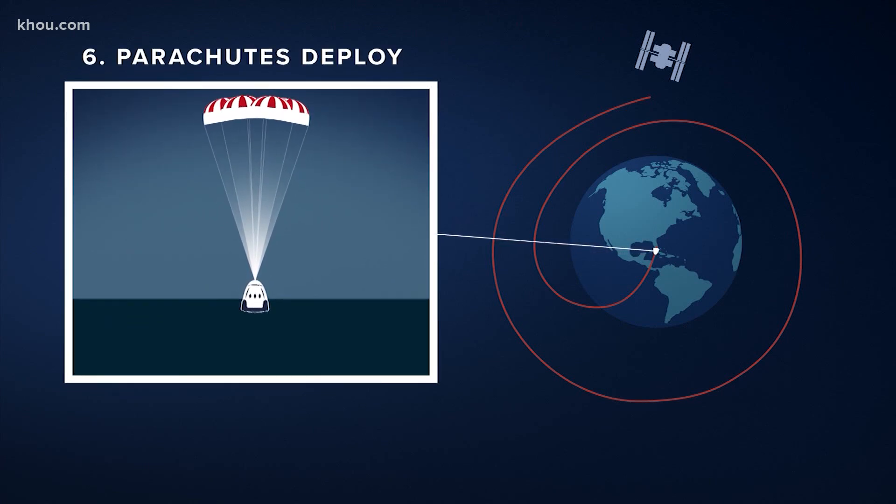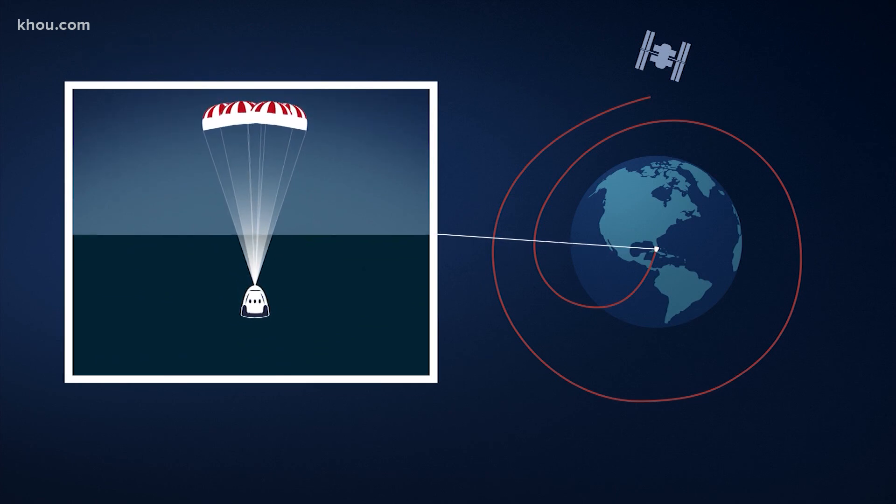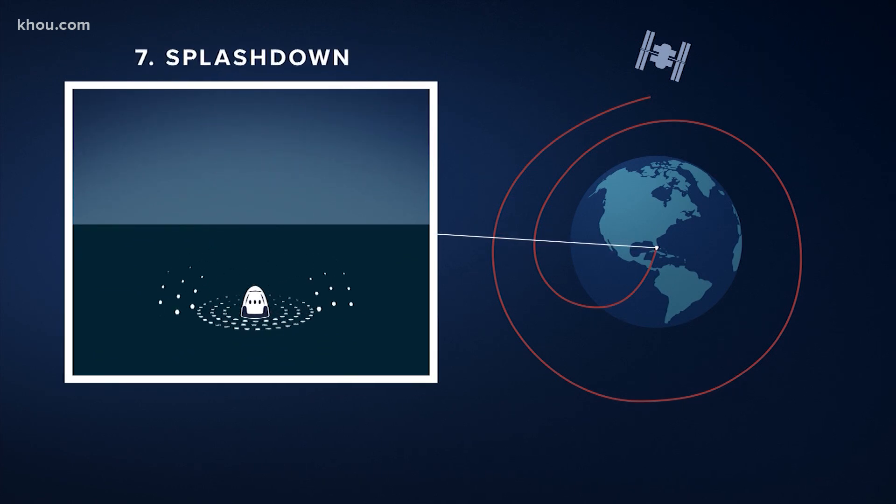The parachutes will do the final part to slow down Crew Dragon ahead of a gentle splashdown somewhere off the coast of Florida.